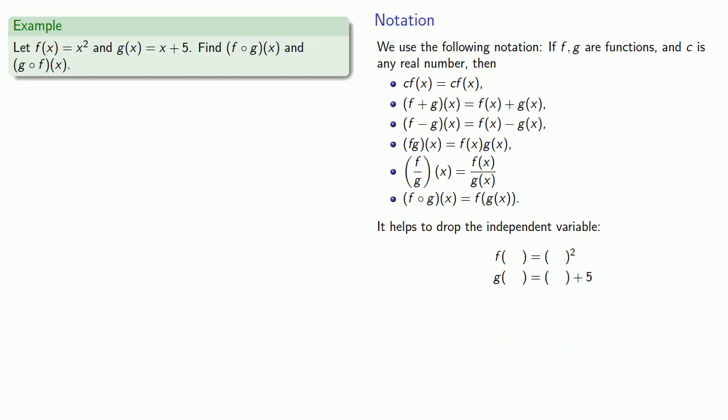So f of g of x is f applied to g of x. Remember our f function is f of x squared. And what we want in the parentheses is g of x. Well, what goes in one set of parentheses should go in all of them. So we'll put a g of x in both our sets of parentheses. Equals means replaceable. g of x is x plus 5, so we'll replace that. And that gives our composition f of g of x.